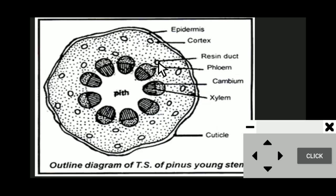Followed by the cortex, you can see an indistinguishable endodermis and pericycle. Next comes the vascular tissue region, which consists of 5 to 9 vascular bundles arranged in a ring.